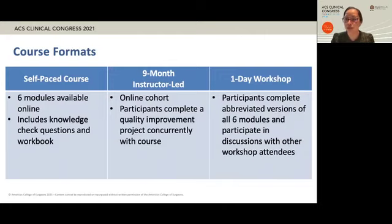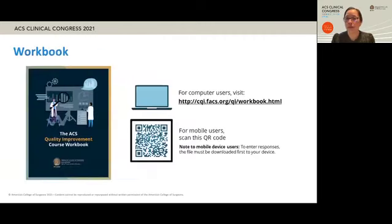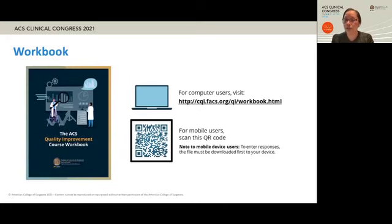Lastly, there will be a one-day workshop that will also roll out next year. One of the resources available to course participants is the quality improvement workbook, available for download at the beginning of each module. There are six sections, one for each course module. The questions in the workbook help participants connect the course content to their local context, and are designed for those currently conducting a QI project, those who have completed one in the past, or those interested in conducting one in the future.